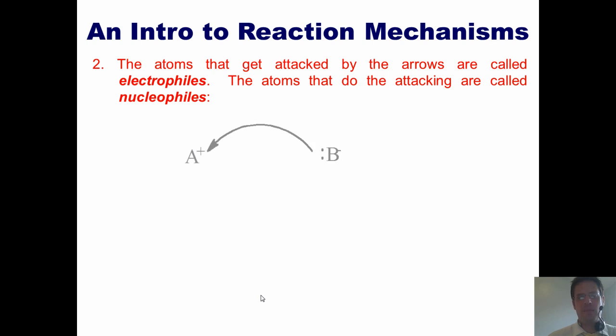In our previous example, we see that this atom A, which is electron deficient, wants electrons. It likes electrons. Therefore, it's an electrophile. Whereas the guy who does the attacking, this guy over here, he's like the archer. He's called the nucleophile.